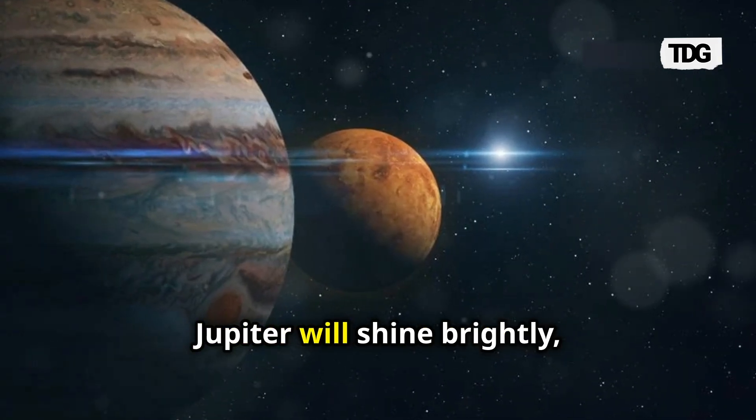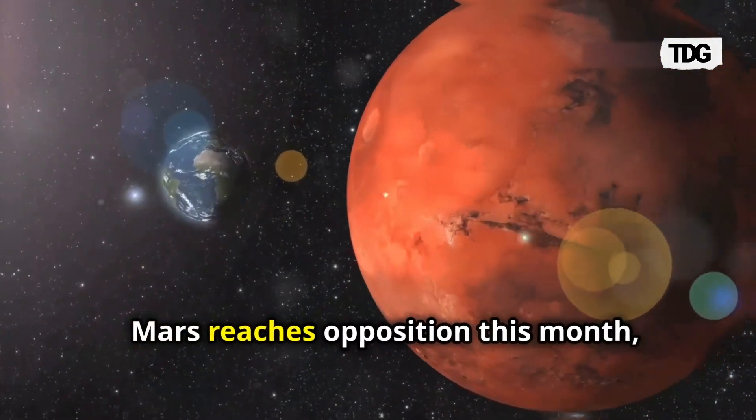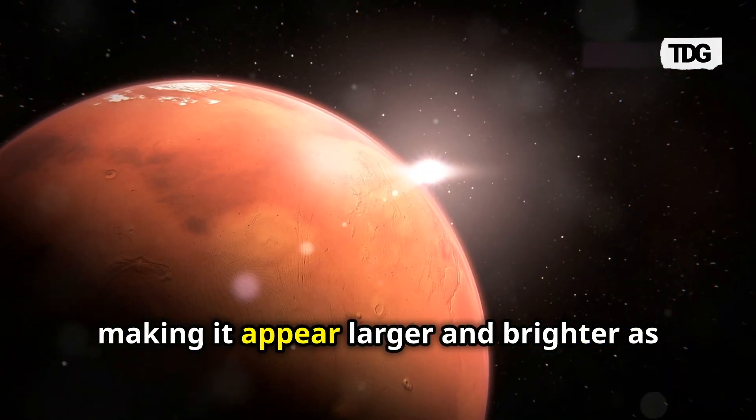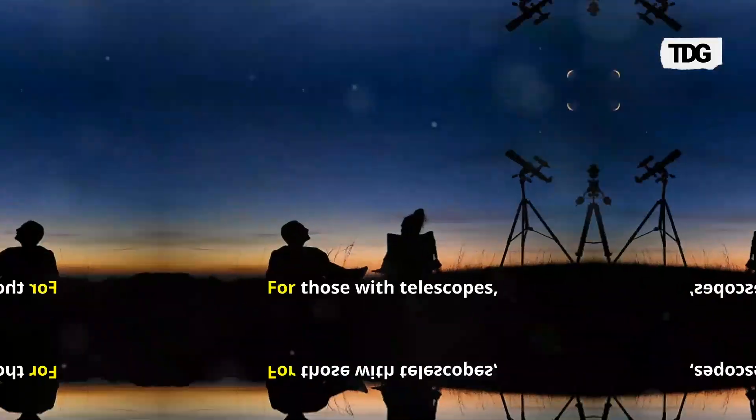Above Venus and Saturn, Jupiter will shine brightly while Mars will glow in the eastern sky. Mars reaches opposition this month, making it appear larger and brighter as it lies opposite the Sun with Earth in between.